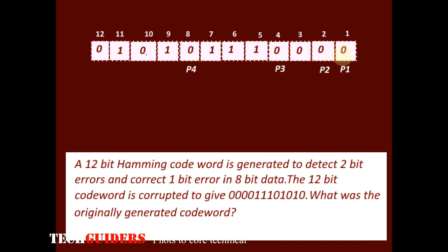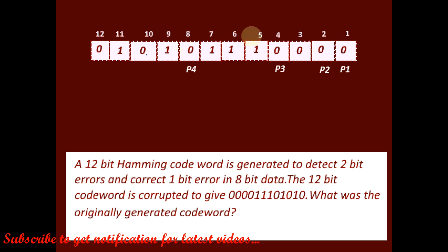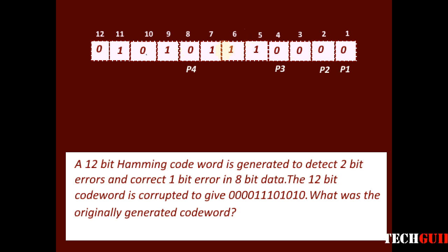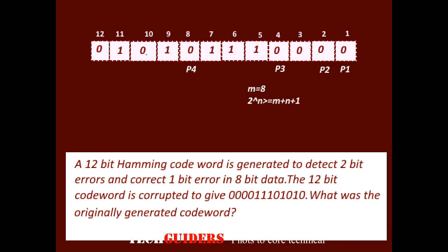So positions 1, 2, 4, and 8 will be the parity bits. For the 8-bit data, 4 redundant bits are added. We shall check with the equation also.